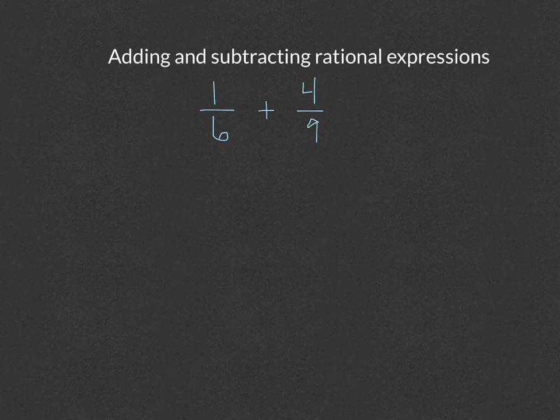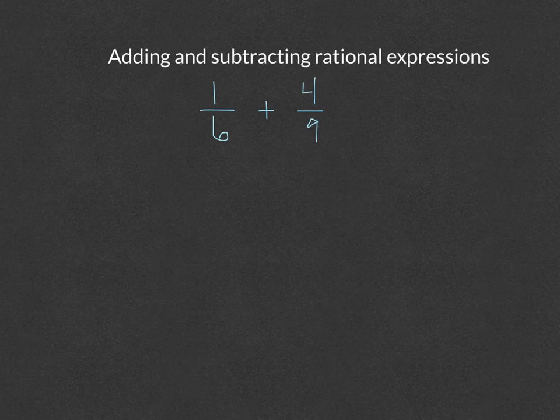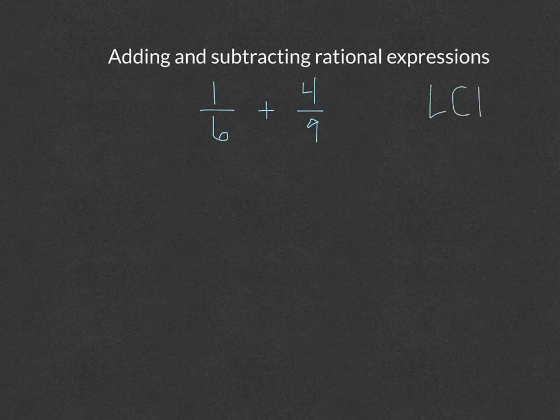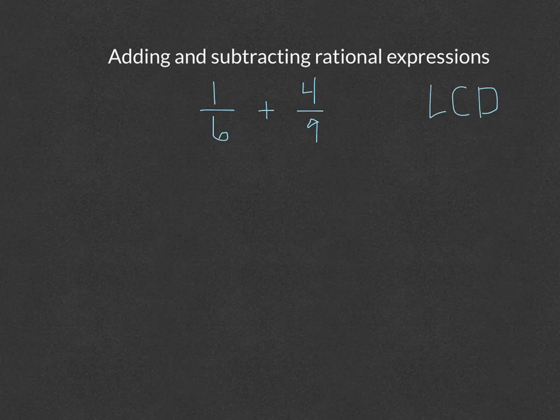Remember that the denominator can be thought of as a unit, meaning that the units have to be the same in order to add them. We need to think about what we need to make 6 and 9 be so that they're the same, and that is called the least common denominator. We need to find the least common denominator between 6 and 9. I'm going to go through the multiples of 6 until I get to one that is also a multiple of 9.